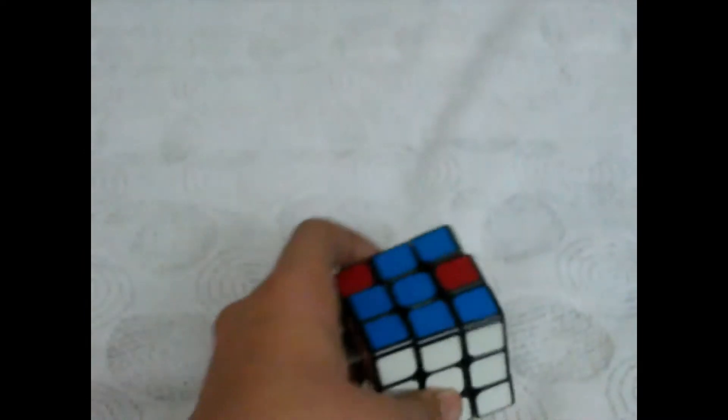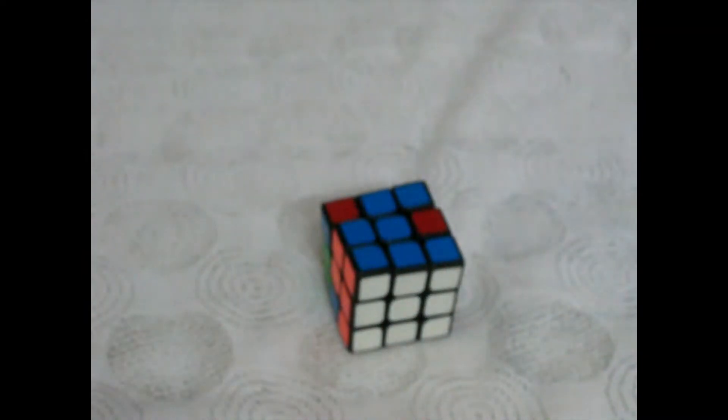Sometimes it takes only one or two moves like r u r prime, or r u r prime u prime r u r prime. But in some cases it takes a lot of time, like it takes three or four whole algorithms. So you just have to repeat this algorithm and your first layer will be solved.